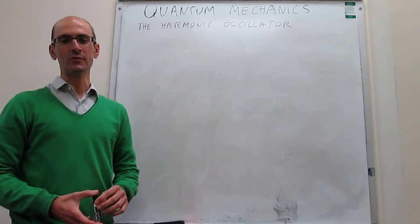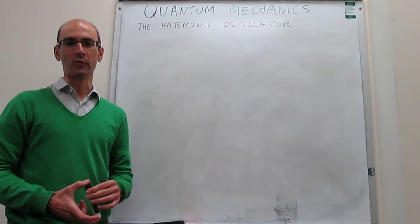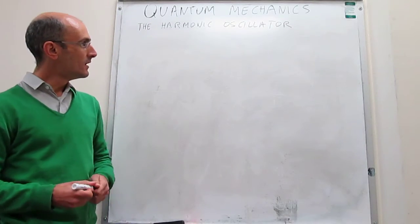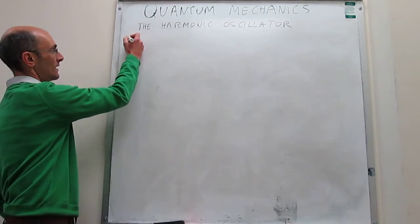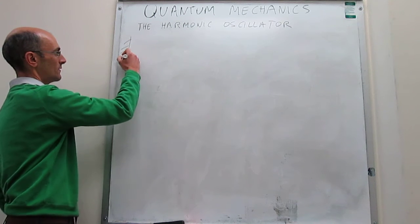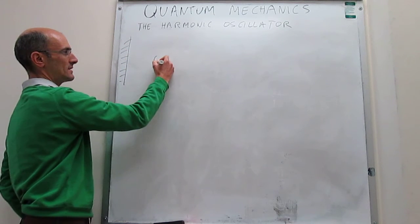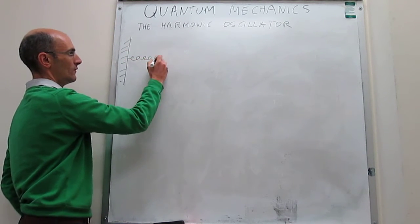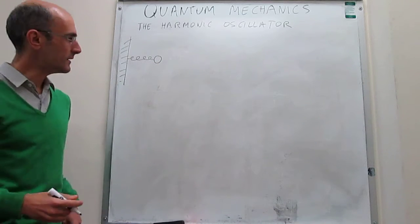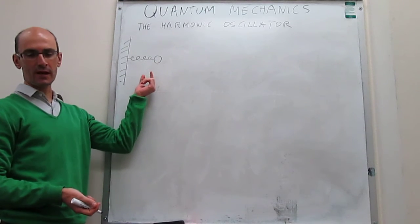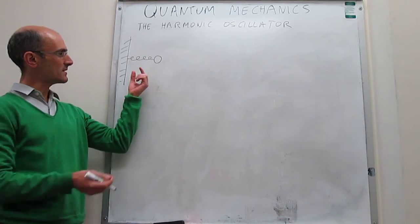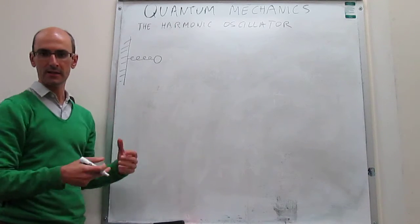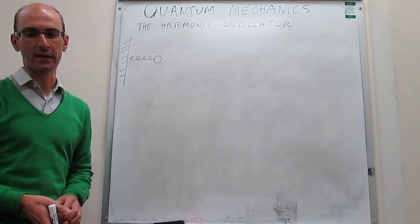In this video, we describe the solution to the Schrödinger equation of a system called the harmonic oscillator. The harmonic oscillator can be envisioned as follows: suppose that you have a mass connected to a wall through a spring, and you examine how the motion of this mass, as it oscillates around an equilibrium position, is from a quantum mechanics perspective.